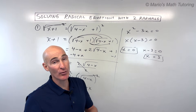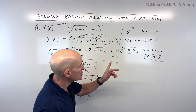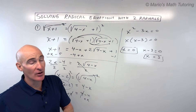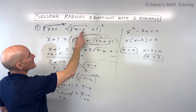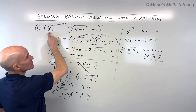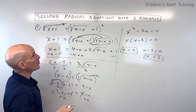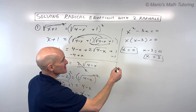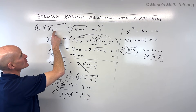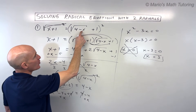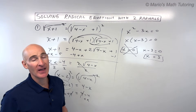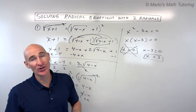Not so fast — one or both solutions might be extraneous. Go back to the original equation and check. Plugging in zero: the square root of four is two, two plus one is three, but the square root of one is one, and one does not equal three — so zero is extraneous. Plugging in three: the square root of four is two on both sides, and two equals two. So x equals three is our valid solution.